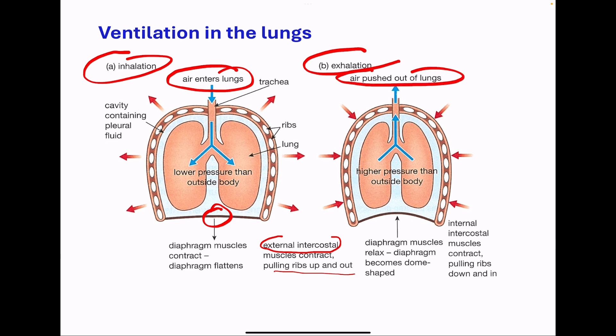In forced exhalation, the diaphragm is going to relax and it will become dome-shaped. The external intercostal muscles are going to relax, while the internal intercostal muscles are going to contract. The chest cavity moves inwards and downwards. This decreases the thoracic volume but increases the thoracic pressure above atmospheric pressure, so air is going to be forced out of the lungs.